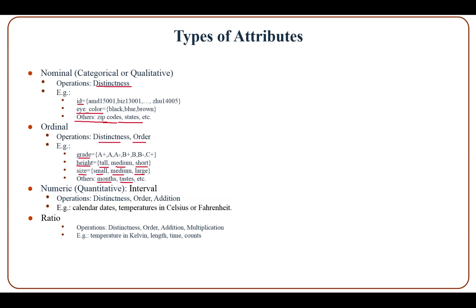With the interval attribute type, there are three operations you can use: distinctness, order, and addition. Examples are calendars or temperatures in Celsius or Fahrenheit.